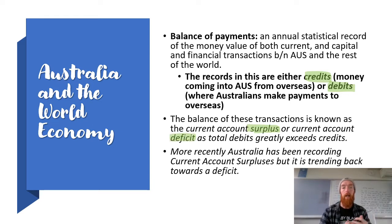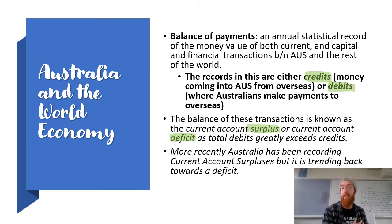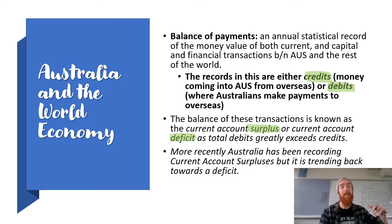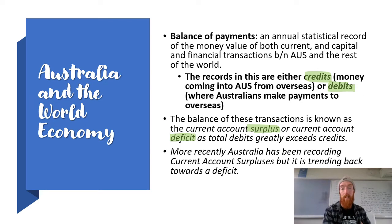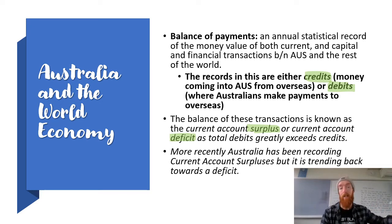A surplus is when credits exceed debits, and a deficit is when debits exceed credits. You need to be able to calculate this through simple math or talk about how something makes things more likely to be a surplus or deficit, or increase or decrease the size of the surplus or deficit. More recently, Australia has been recording current account surpluses, with the strength of our commodities exports keeping our trade balance positive.